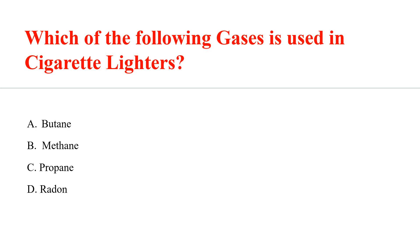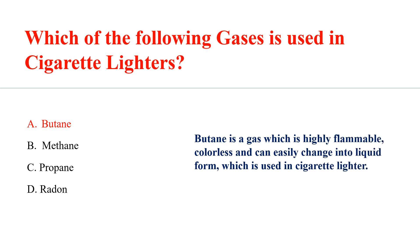Which gas is used in cigarette lighters? The answer is butane. Butane is a highly flammable, colorless gas that can easily change into liquid form, which is why it is used in cigarette lighters.